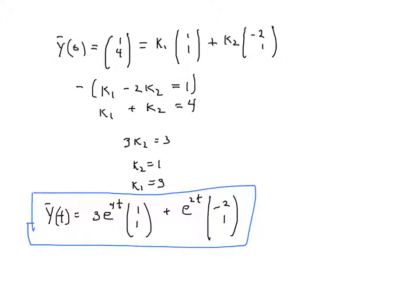This is a linear vector-valued function that solves the differential equation. Each one of these individually solves the differential equation; a scalar multiple of one of them also solves it; and a sum of two solutions is also a solution. So this is our general solution. It would be nice to draw a graph, but that will have to wait until better technology is available. I hope this helps — good luck!